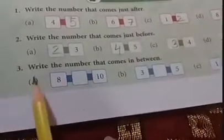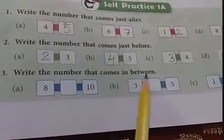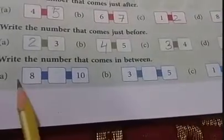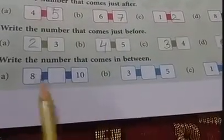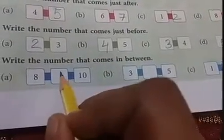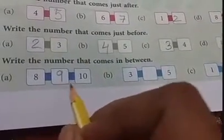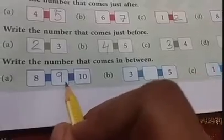Here you have to write the number that comes in between. So here we have to write the given 2 numbers. 8 and 10 has given. We know that after the 8 the number should be 9. And before the 10 is also 9.